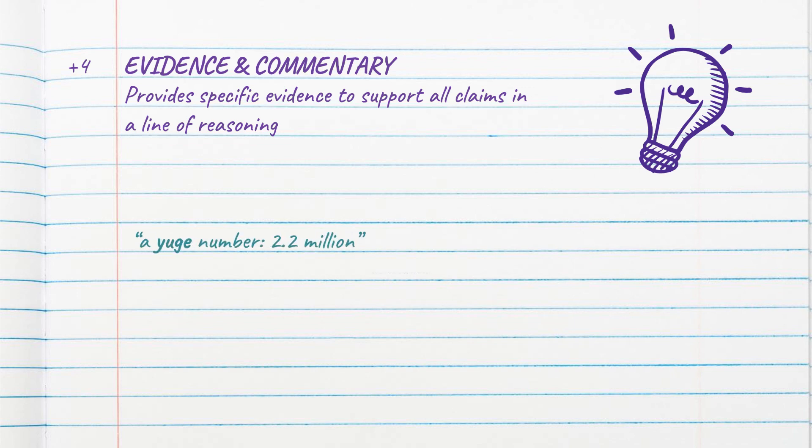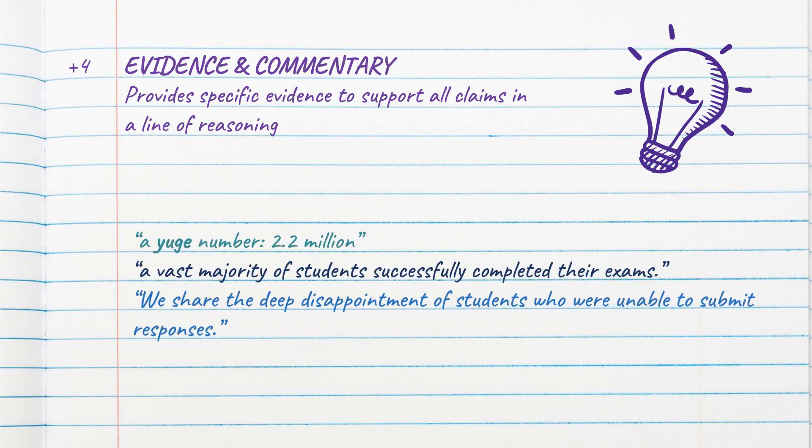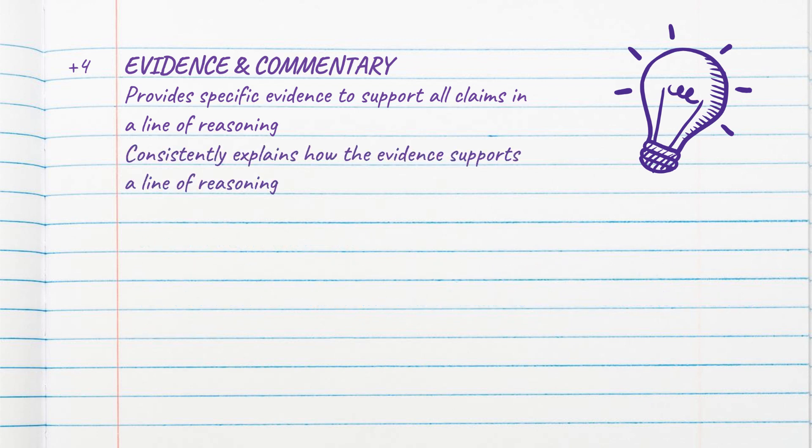You can earn up to four points for your evidence and commentary. To earn full credit, you need to provide specific evidence that helps support your claim. You can't just cite the text. You need to make sure that you explain how this evidence backs up your argument. And every time you write a paragraph, remember to reinforce your thesis at the end.